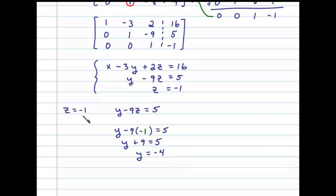And we'll use this and the fact that z equals negative 1 in the first equation to determine x. And so here we'll substitute negative 4 in for y and negative 1 in for z. Solving, x plus 12 minus 2 then equals 16, or x plus 10 equals 16, x equals 6.